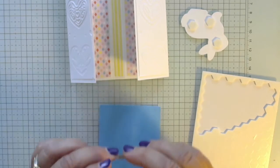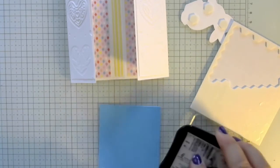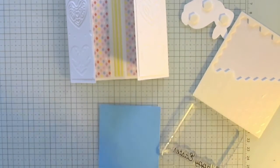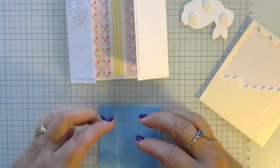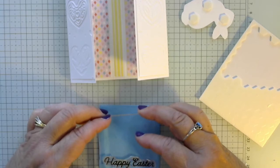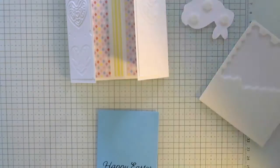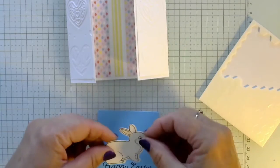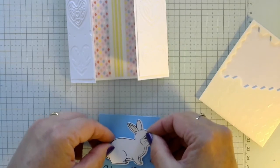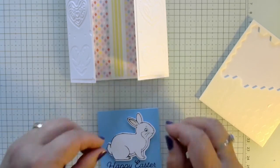We're just going to stamp that at the bottom. Grab our black ink in here again. We'll just get this right on the bottom. And then we'll put our bunny on top of the Happy Easter. Make sure his ears kind of stay on.